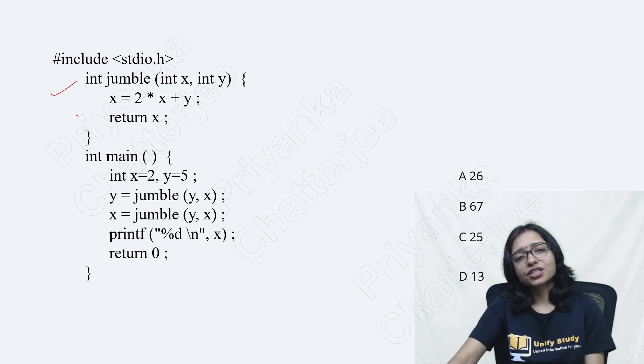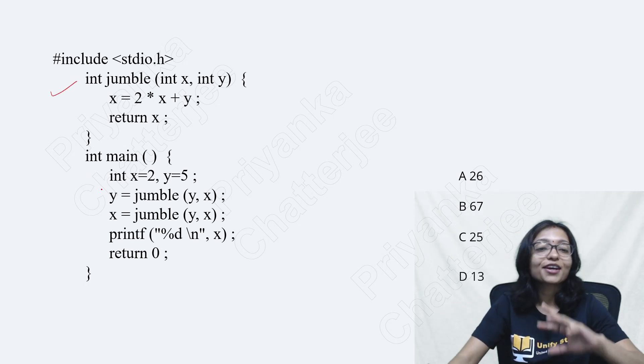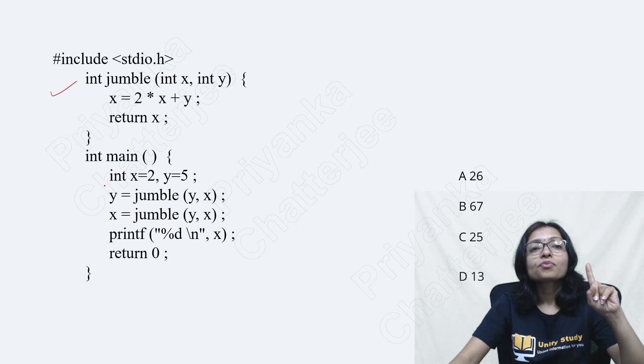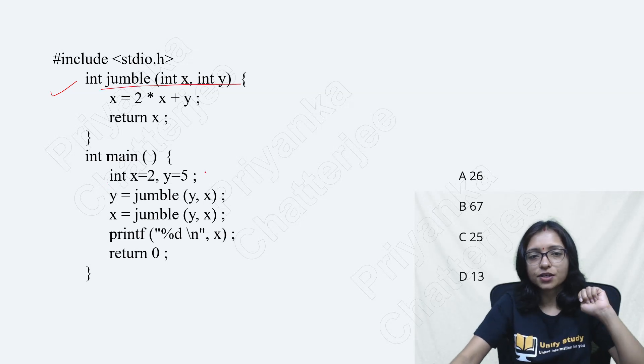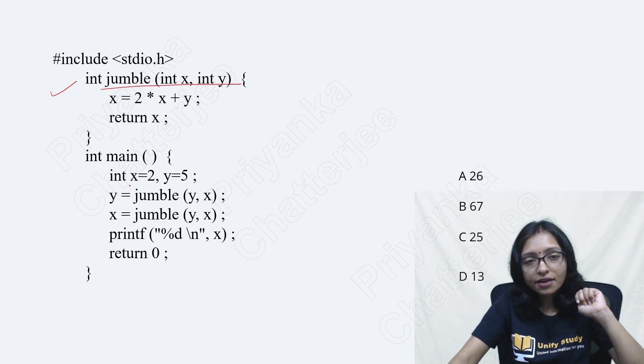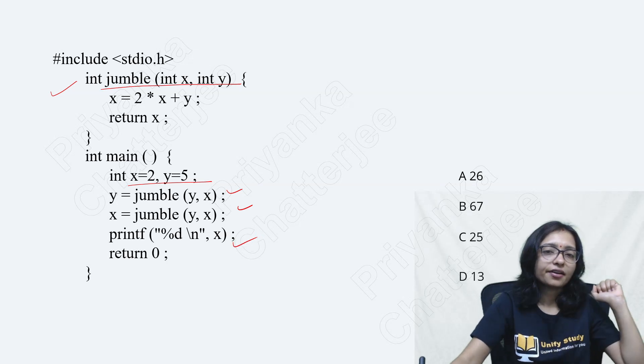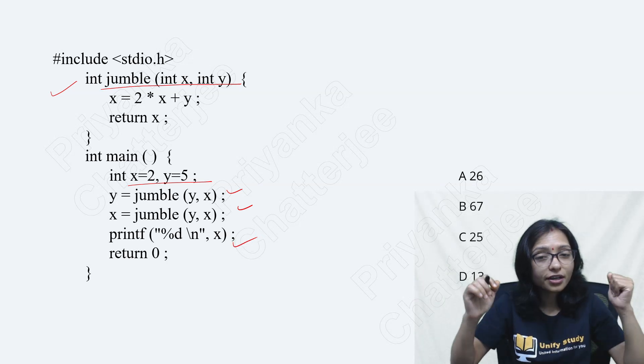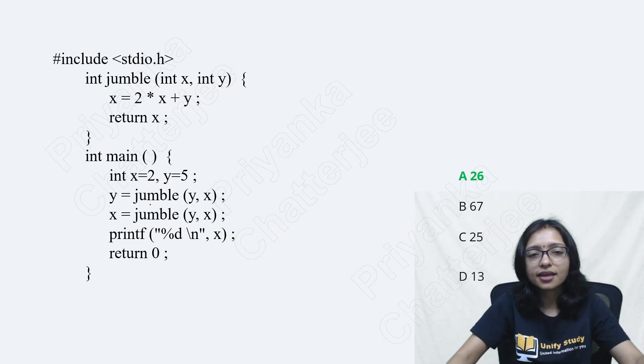Now, this question. This is just like a jumble. Nothing else is here. It is a game here going on. Here it is a normal function call. You are calling this function, you are passing the variable 2 and 5. Now you are calling 2 times. After that, finally you are printing here. What is going on here? Here also, your basic math is required. Nothing else.